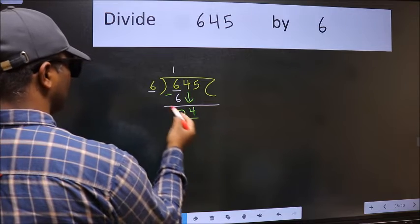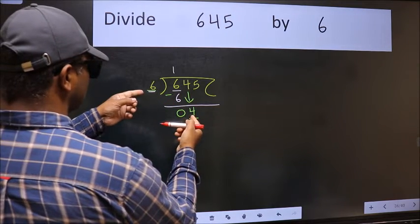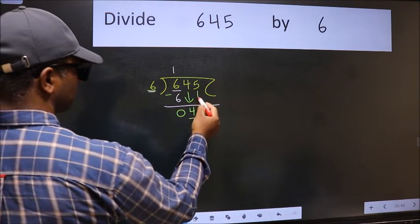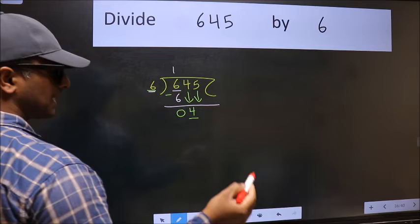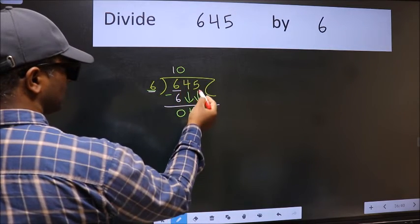Now here we have four and six here. Four is smaller than six, so we should bring down the second number. The rule to bring down the second number is we should put zero here. Then only we can bring this number down.